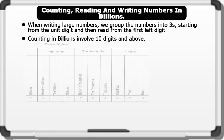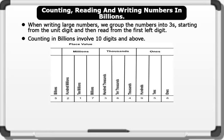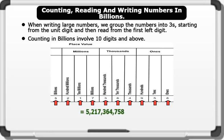Let's check out this example — placing the digits in a place value: 5 is placed in the billions column, 2 is placed in the hundreds of millions column, 1 is placed in the tens of millions column, 7 is placed in the millions column, 3 is placed in the hundreds of thousands column, 6 is placed in the tens of thousands column, 4 is placed in the thousands column, 9 is placed in the hundreds column, 5 is placed in the tens column, and 8 is placed in the ones column. This gives us 5,217,364,958.